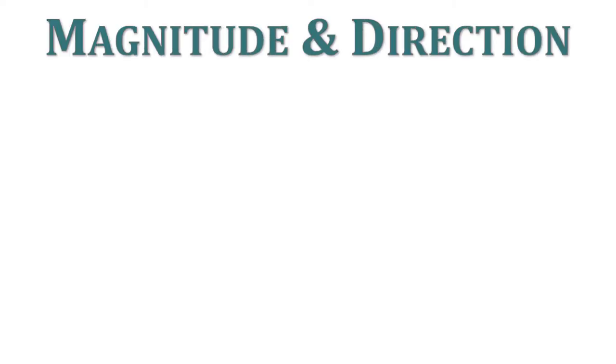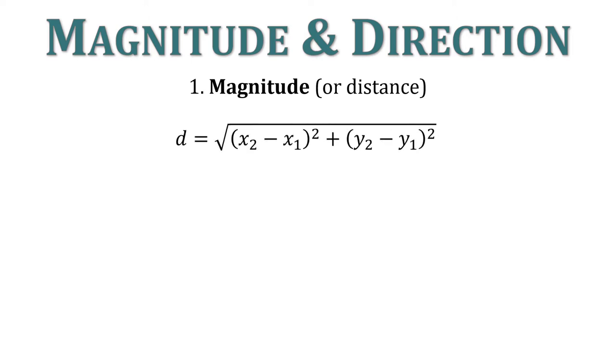So magnitude and direction are the two components of a vector. Magnitude is distance. How long is this vector? To determine the distance, we're going to use the distance formula from geometry. The square root of x2 minus x sub 1 squared plus y2 minus y sub 1 squared. All under the square root. Now we also can determine the direction. To determine the direction, we're going to simply use slope. M equals y2 minus y1 all over x2 minus x1. So these are all things that you already know and that you're extremely familiar with.